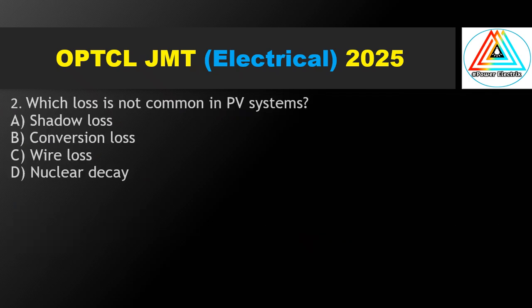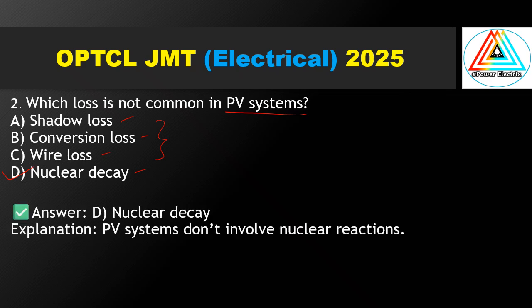Question No. 2: Which loss is not common in a PV system? Shadow loss, conversion loss, wire loss — the answer is only nuclear decay. Solar systems don't involve nuclear reactions.